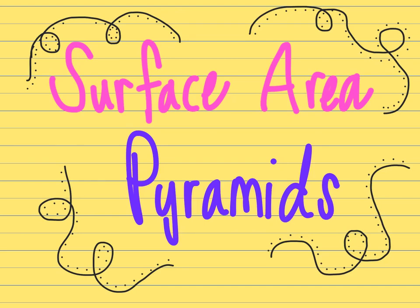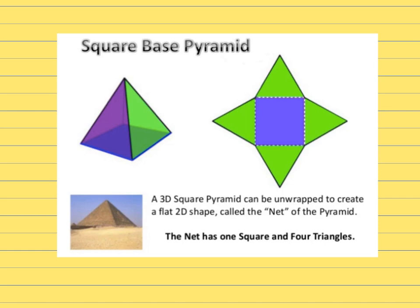This video is going to go over surface area, and we are going to be looking at only pyramids. One of the pyramids we could see is a square-based pyramid. This first view is in a 3D perspective — you can kind of see through the figure, and the base is underneath. When you unfold or unwrap it, the base would be the part in the center, and all the sides would fold down to go around. Sides are always triangles on pyramids.